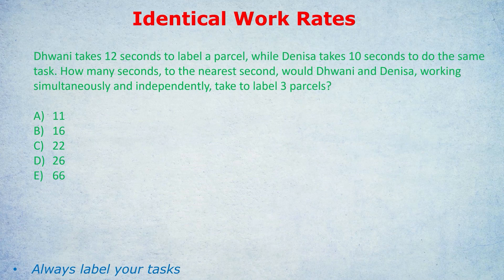This is a normal work rate question. Dewani is taking 12 seconds, Denisa is taking 10 seconds. I just wanted to test if I could fool you about the difference between identical and normal work rates. I don't want you to always use the identical work rate trick just because you think it's good. In this case we wouldn't use it — we'd use the normal work rate method as featured in my other work rate videos in my quant playlist.